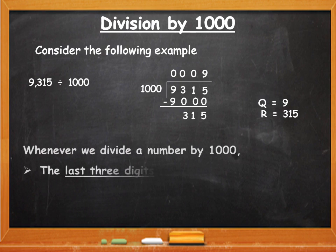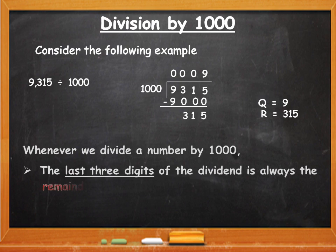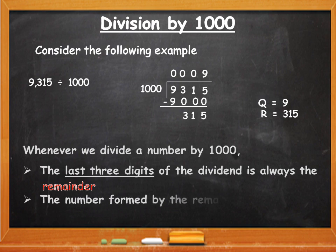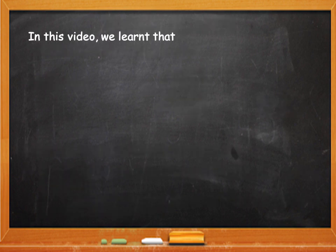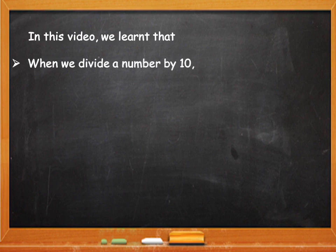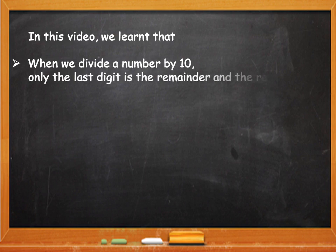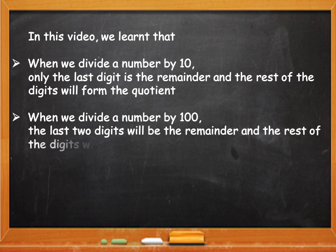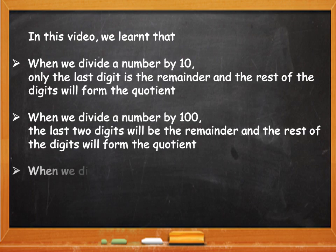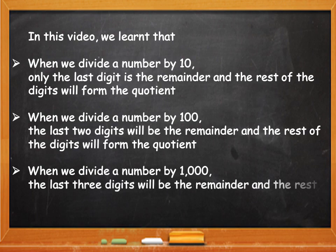So what did we observe? Whenever we divide a number by 1,000, the last three digits of the dividend are always the remainder, and the number formed by the remaining digits is the quotient. In this video, we learnt that when we divide a number by 10, only the last digit is the remainder and the rest of the digits form the quotient. When we divide by 100, the last two digits are the remainder. When we divide by 1,000, the last three digits are the remainder, and the rest of the digits form the quotient in both cases.